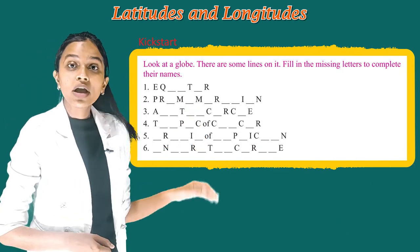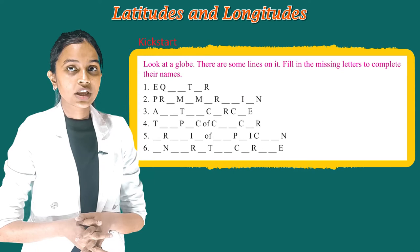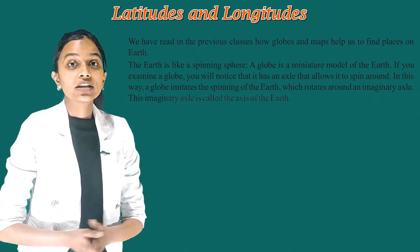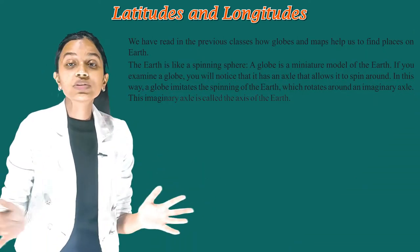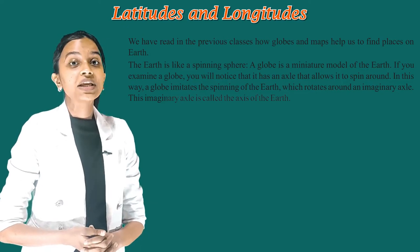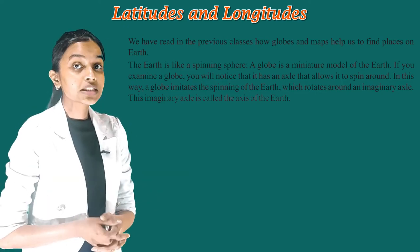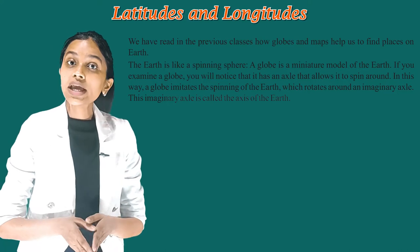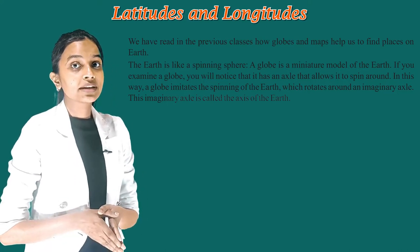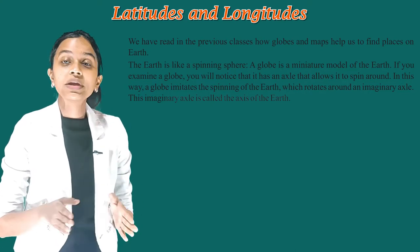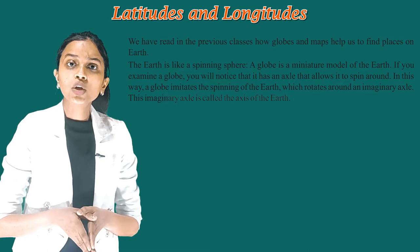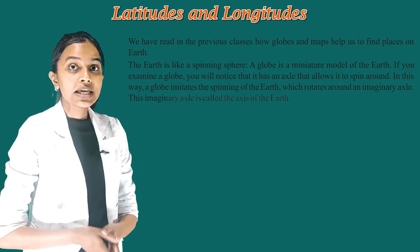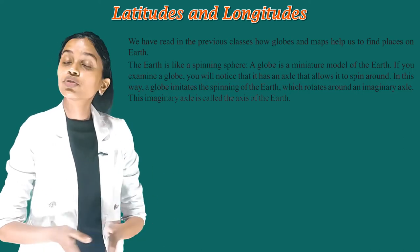Look at a globe — there are some lines on it. We have read in previous classes how globes and maps help us to find places on earth. The earth is like a spinning sphere. A globe is a miniature model of the earth. If you examine a globe, you will notice that it has an axle that allows it to spin around. In this way, a globe imitates the spinning of the earth, which rotates around an imaginary axle. This imaginary axle is called the axis of the earth.